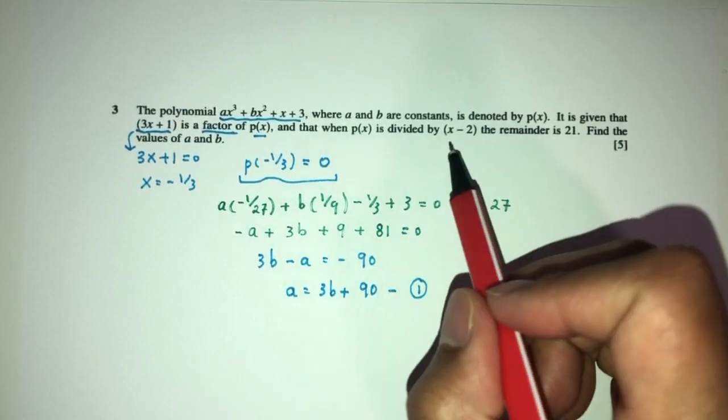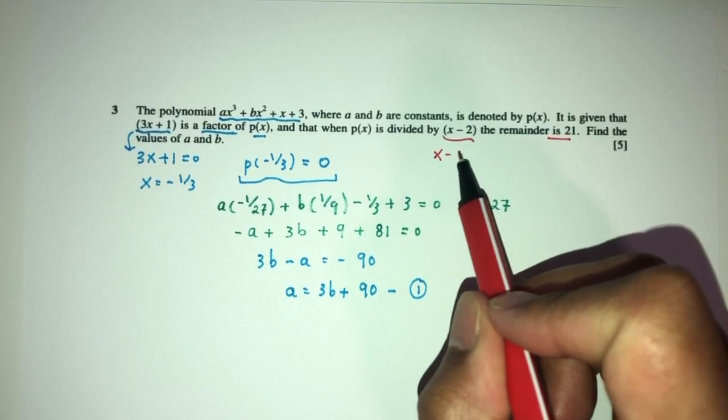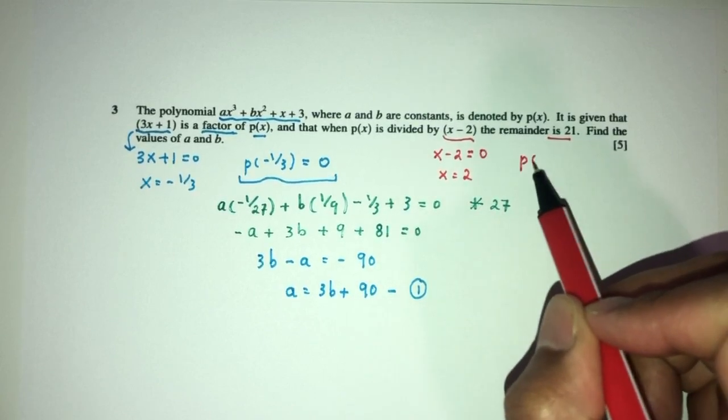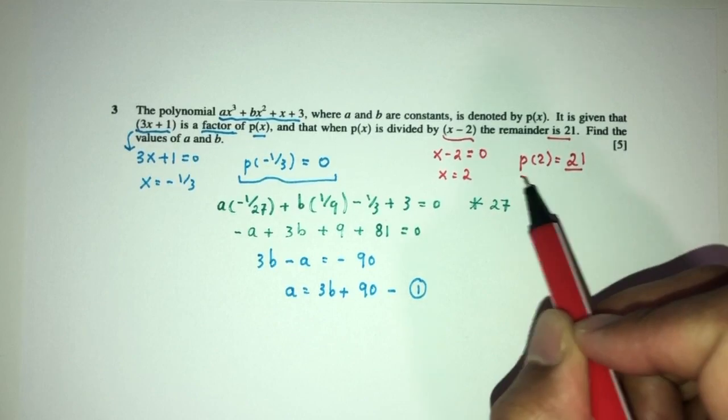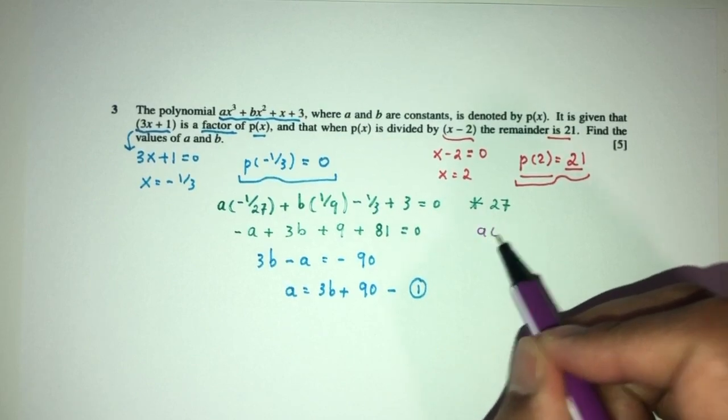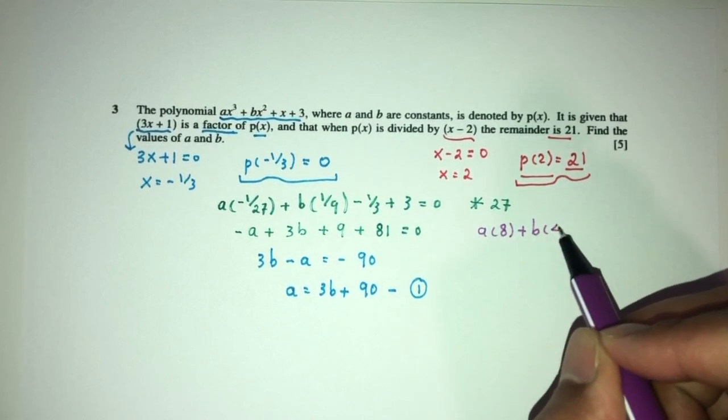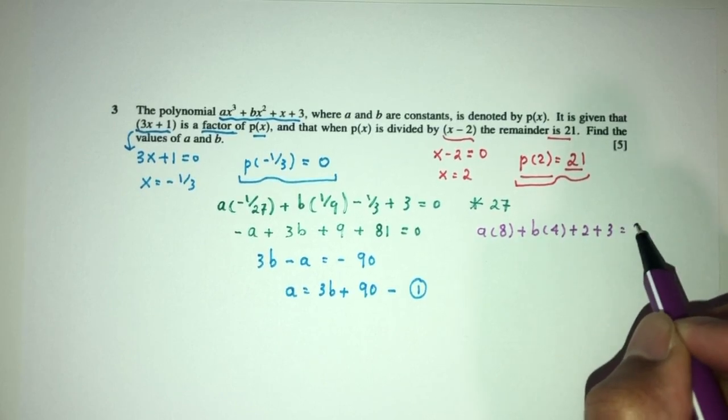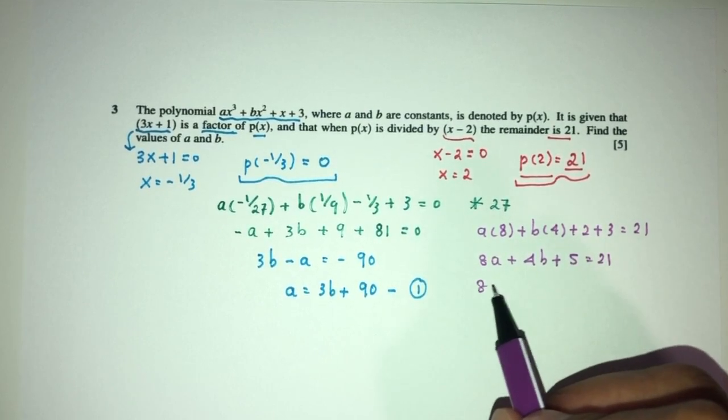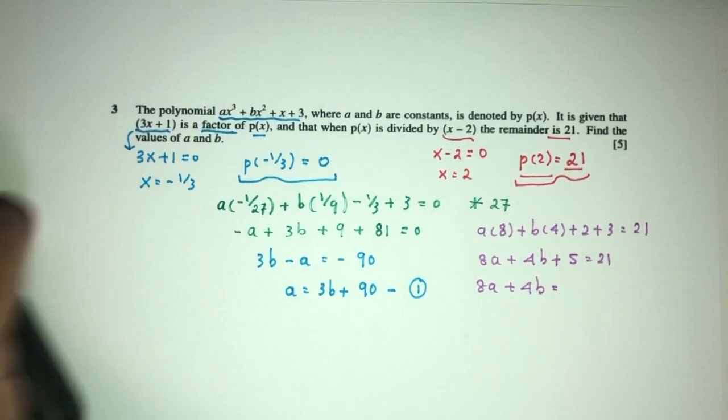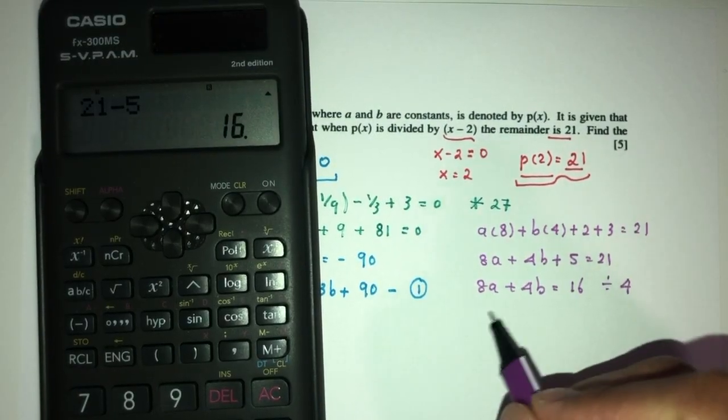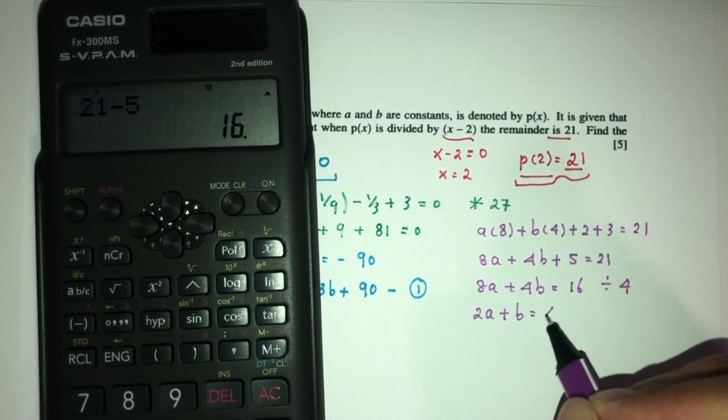Now for part 2, when p(x) is divided by this one, the remainder is this. For what value of x? Take the factor here, equal to 0, x = 2. It means when p taking the value of 2 will have a remainder of 21. Let's form an equation as well. a(8) + b(4) + 2 + 3 = 21. That's 8a + 4b + 5 = 21. Simplify: 8a + 4b = 16. Divide by 4 everywhere: 2a + b = 4. This is my equation number 2.